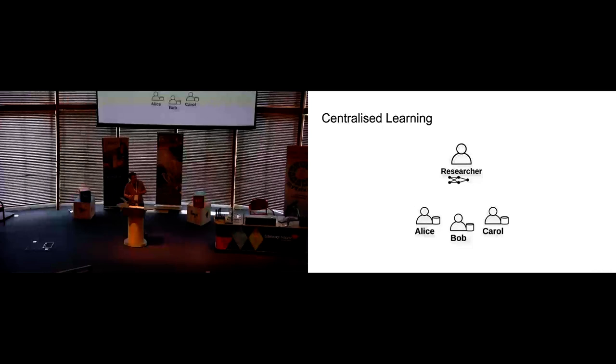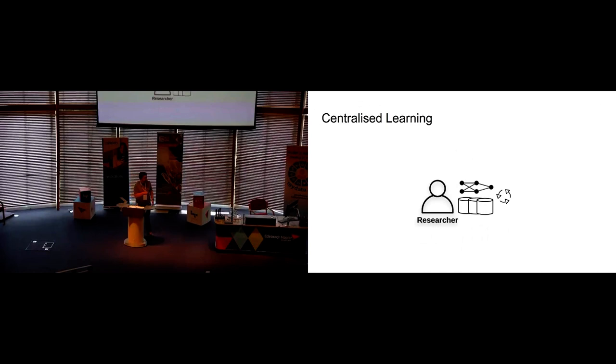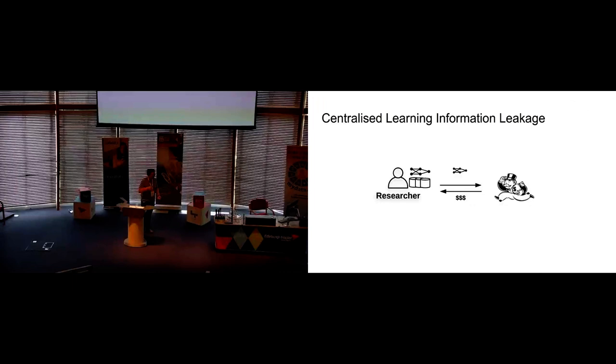So in traditional centralized learning, we have a researcher and we have citizens with data. They send their data to this researcher, and he aggregates it and trains his model with this data. At the end of it, he's got a model and some data. Usually what he'll do is he'll sell the model to some corporation or the use of this model to a corporation and get some money. And that's a conventional, sort of accepted and quite okay business model.